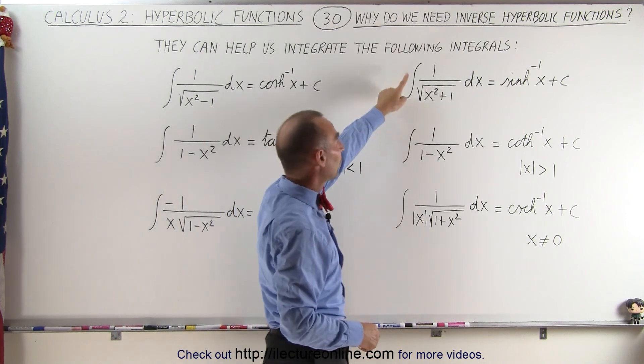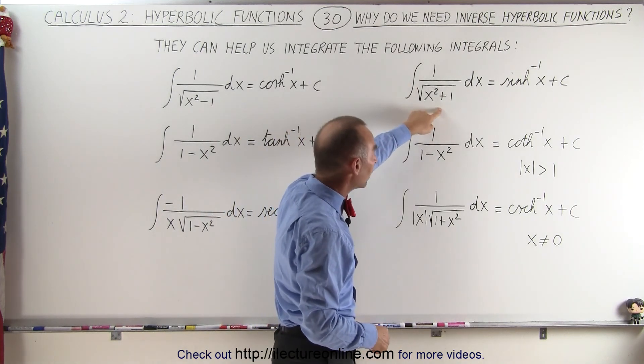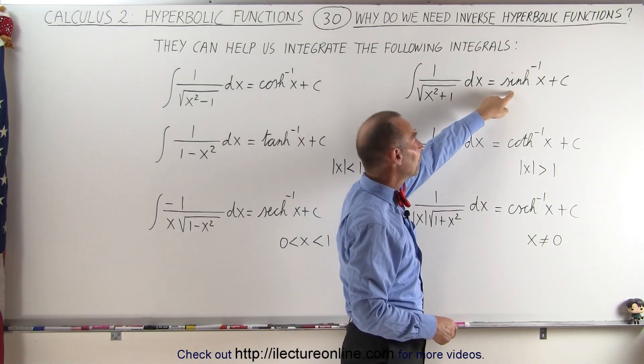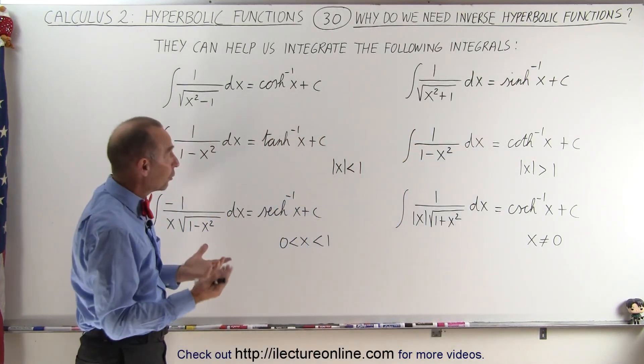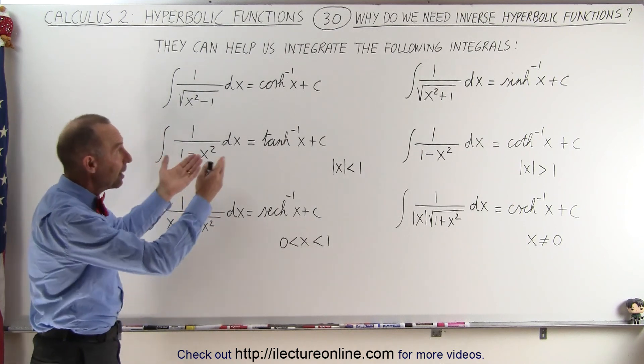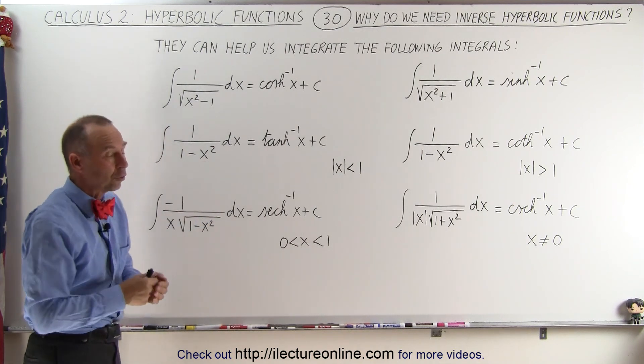And the integral of 1 over the square root of x squared plus 1 is equal to the inverse hyperbolic sine. So you can see that these are integrals that otherwise would be very difficult to execute, but now we know the solution to those.